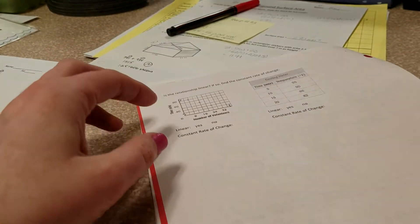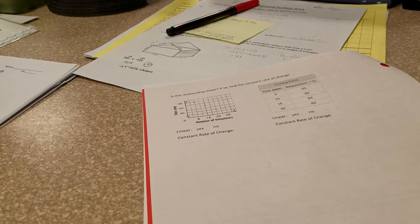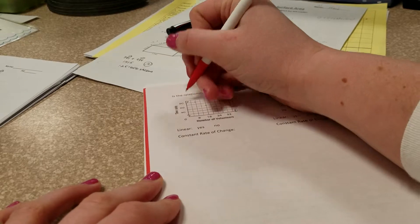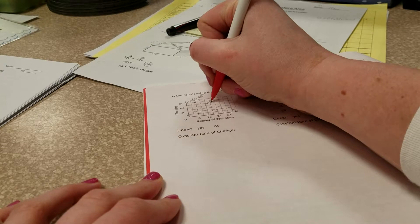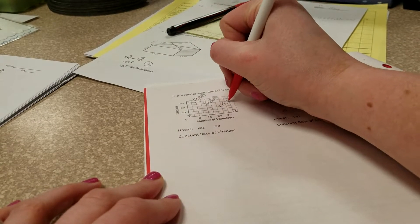On the next page, we have two more examples. So we're looking at, is the relationship linear? If so, find the constant rate of change. Looking at these points, we can actually identify them. This is the point 8,80. This is the point 16,60, and this is the point 24,40.